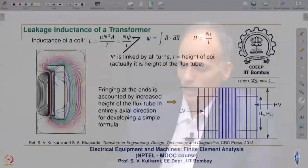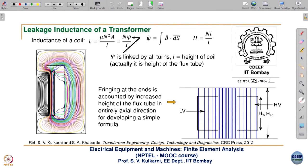The flux plot in this window can be approximated as shown. This is the LV winding, this is the HV winding. Because of end effects, the flux is fringing at the end. With such fringing it will be difficult to find inductance by a simple analytical formula, so we have to make an approximation.